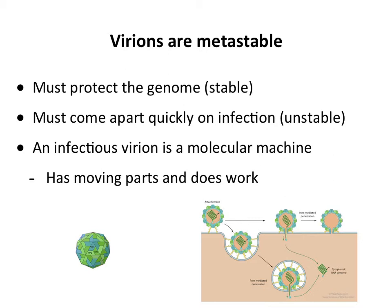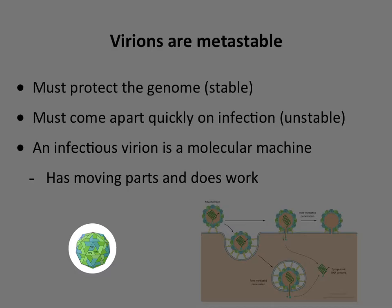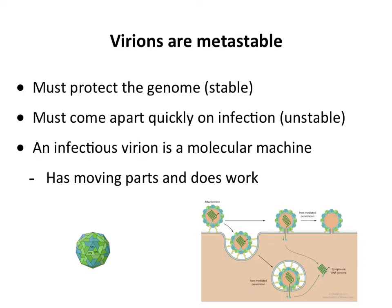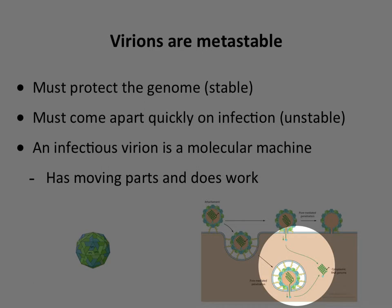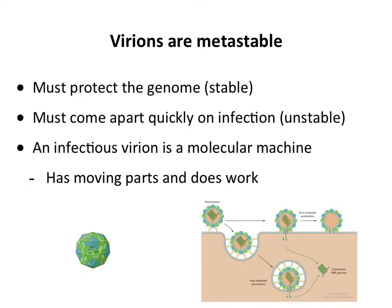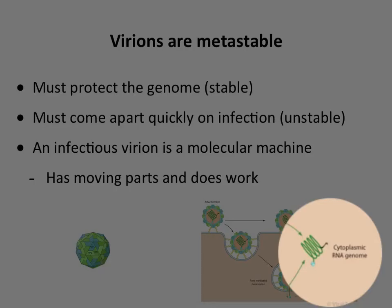Virions are metastable. I want you to think of them not as a passive particle that simply gets taken up into the cell and opens up, but as a machine — because they are machines. They have moving parts, they do work, and they expend energy. We say virions are metastable because they have to be both stable and unstable. They have to be stable to protect the genome as it goes from cell to cell, but they also have to come apart quickly during infection to release the genome at the right trigger. Here, for example, is a stable virion on the lower left that's very good at protecting the genome. But when it gets into the right cell and upon the right triggers, the virion has to become unstable and let the genome out.